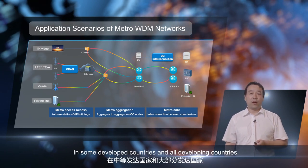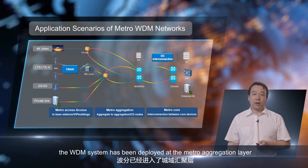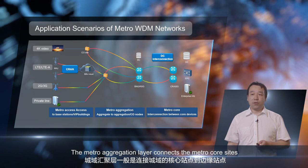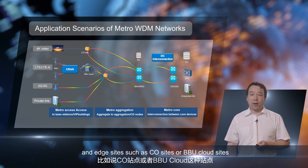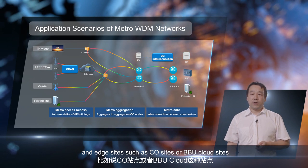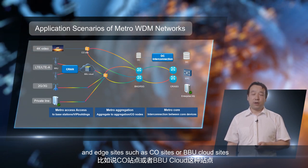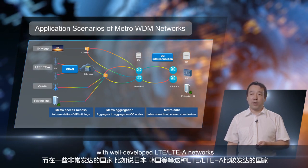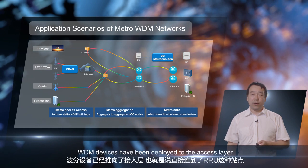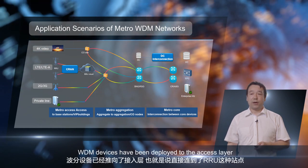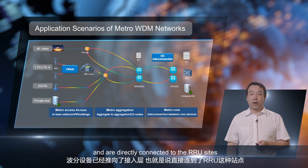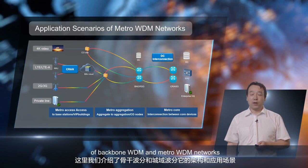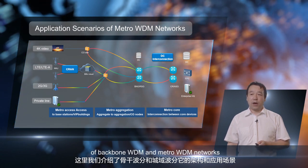In some developed countries and all developing countries, the WDM system has been deployed at the Metro Aggregation layer. The Metro Aggregation layer connects the MetroCore sites and edge sites, such as CO sites or BBU cloud sites. In some developed countries, such as Japan and South Korea, with well-developed LTE and LTE-A networks, WDM devices have been deployed to the access layer and are directly connected to the RRU sites. This covers the architecture and application scenarios of Backbone WDM and Metro WDM networks.